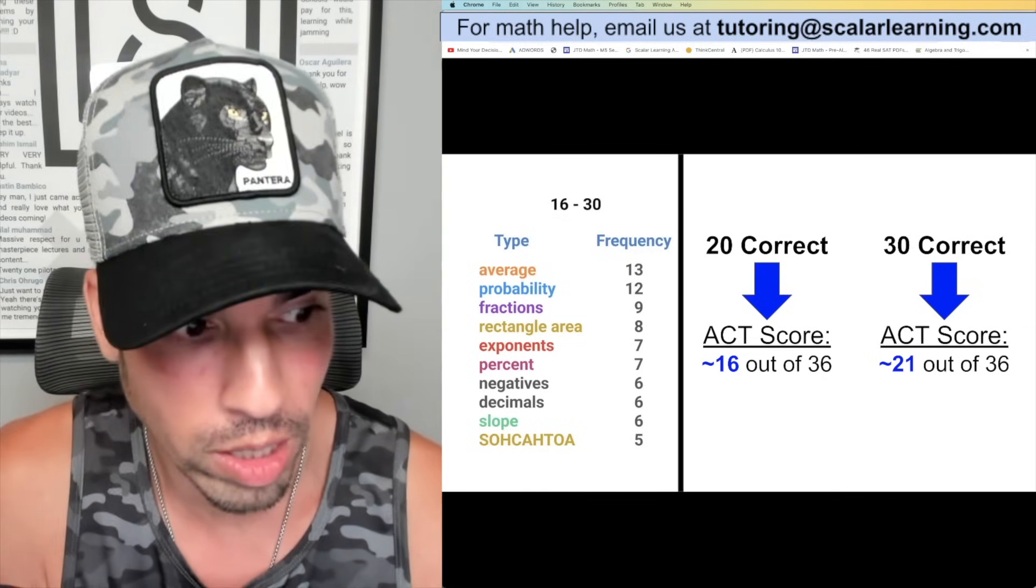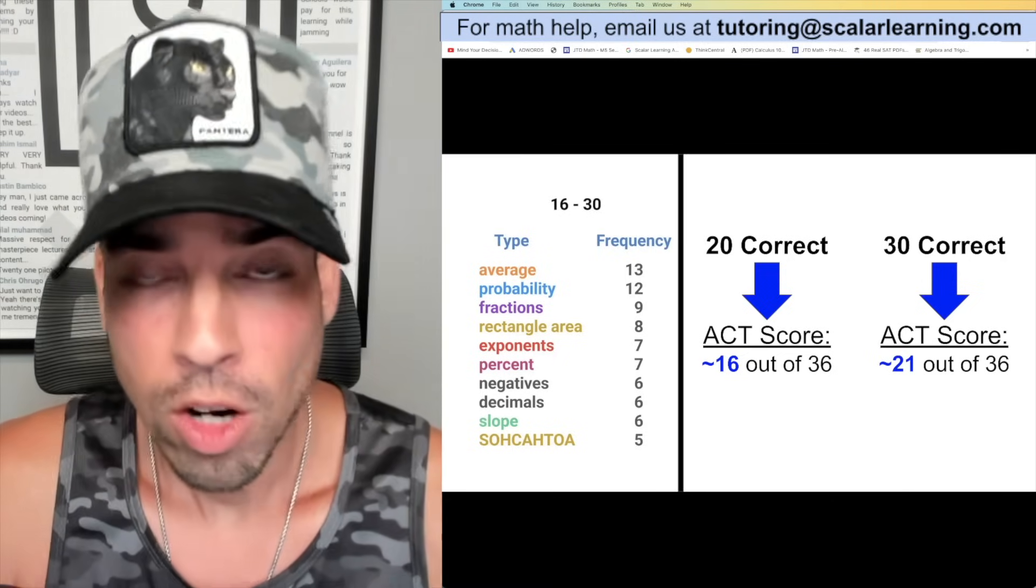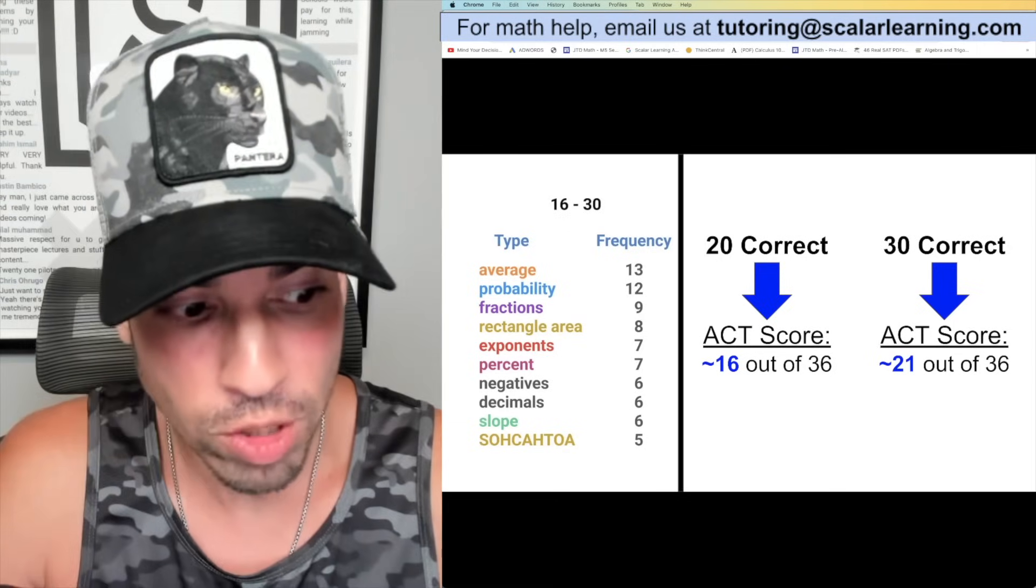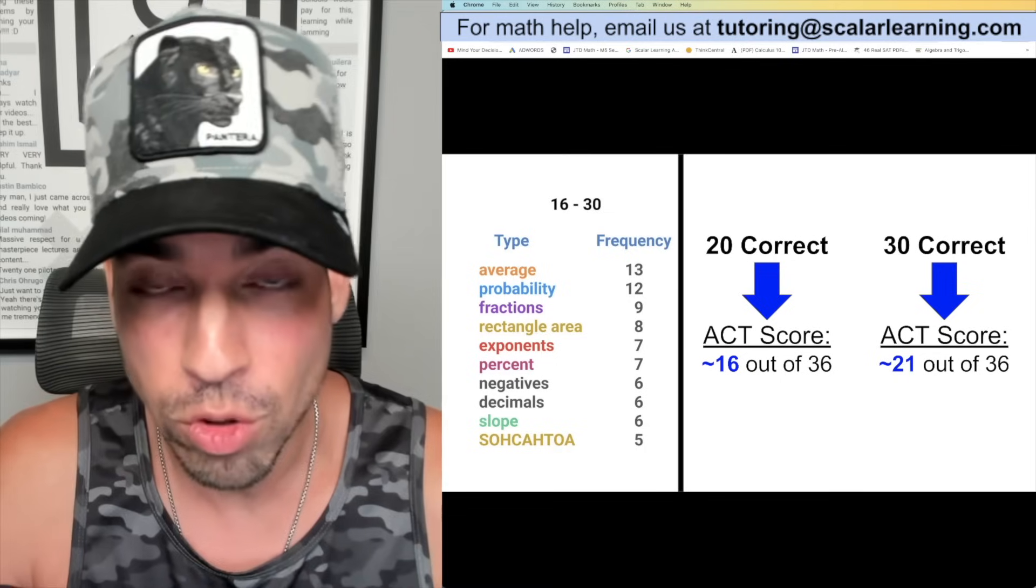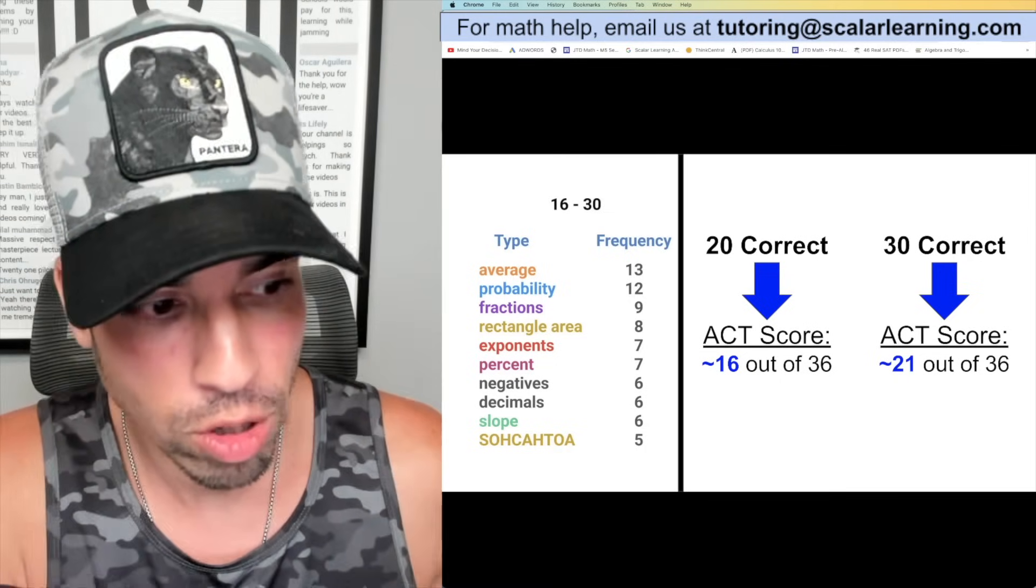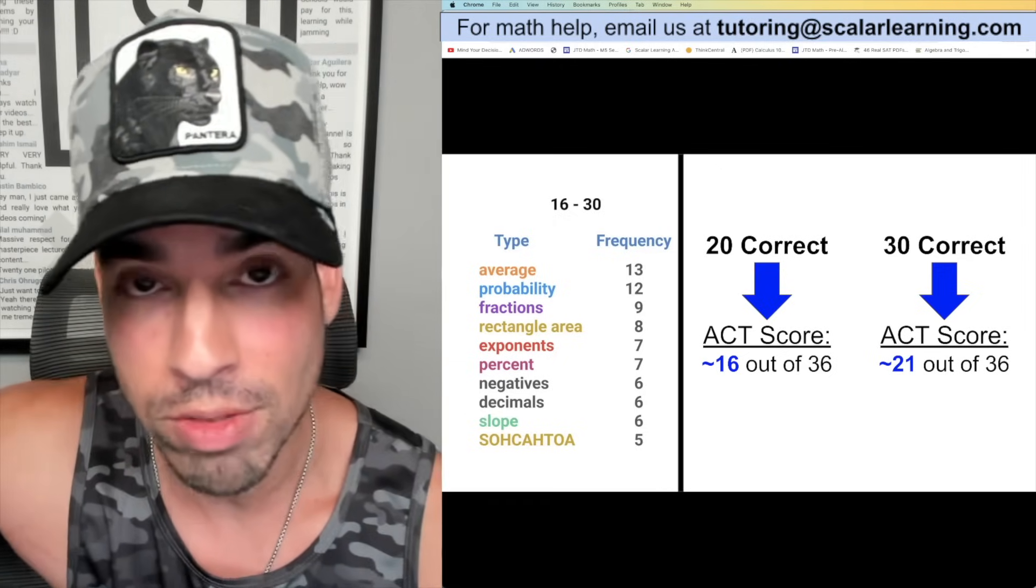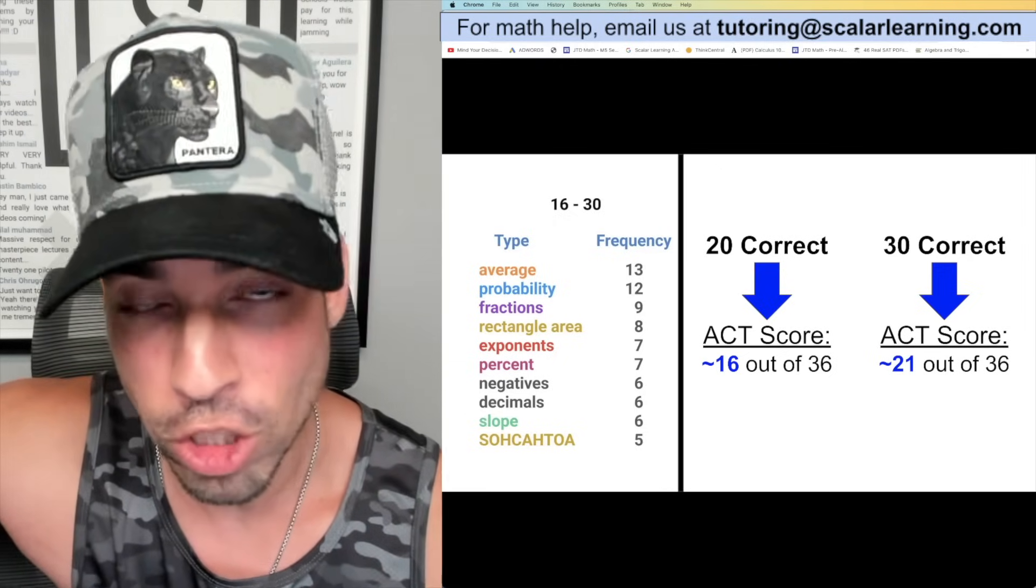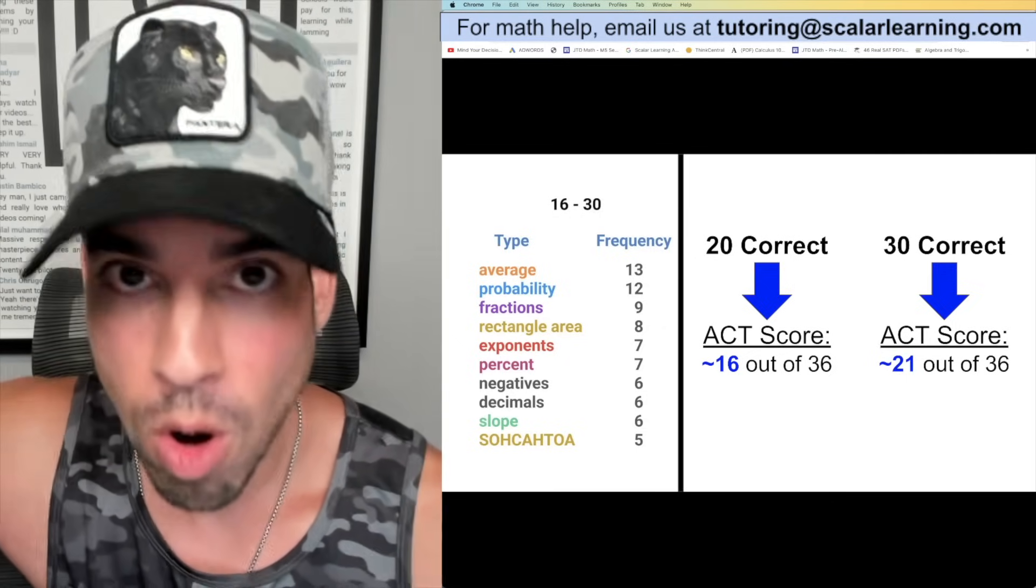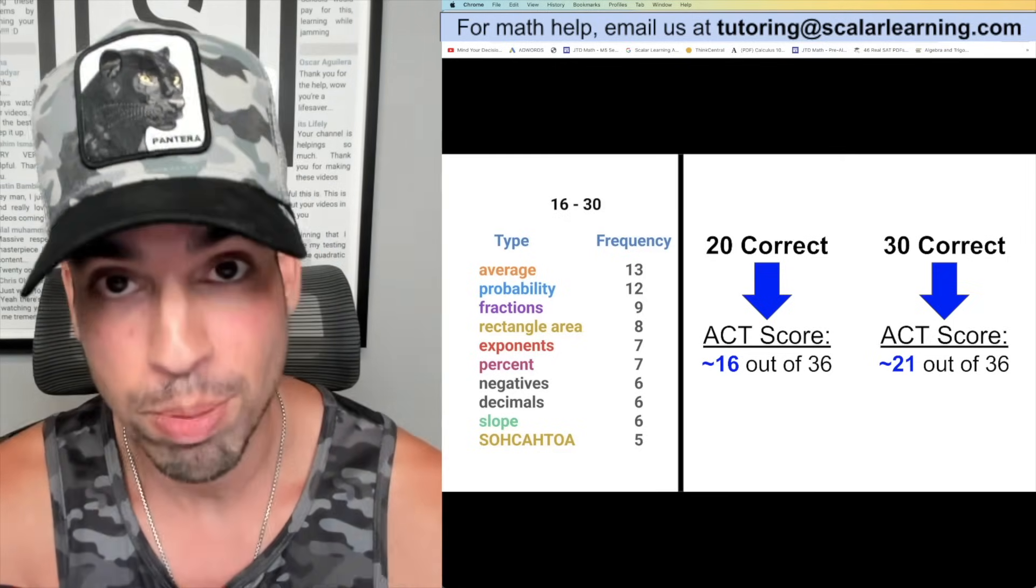In this type of trig, we're really talking about a core understanding of SOHCAHTOA, which is sine equals opposite over hypotenuse, cosine equals adjacent over hypotenuse - that basic triangle application of SOHCAHTOA. It could possibly involve law of sines and cosines, but usually from what I've seen, those trig questions are always going to be later in the test.